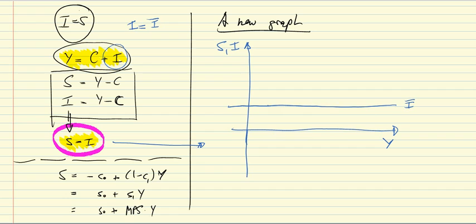How do I draw the savings function? The savings function is S0, or the negative of the autonomous amount of consumption, which has to be a negative intercept here. I'm going to label it minus C0. And has a slope of the marginal propensity to save, which is one minus the marginal propensity to consume. So it has a positive slope that lies between 0 and 1.